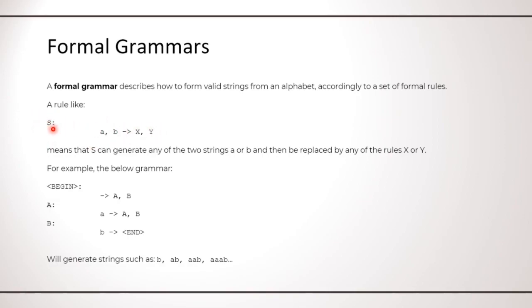This notation means that the rule S can generate any of the two strings, A or B, and then be replaced by any of the other rule X or Y. For example, the grammar you see at the bottom of the page starts with a begin rule from which you can move to either rule A or B. If you choose A, you emit the letter A, and then you can choose again between rule A or B. If you choose B, you emit the letter B, and then you stop.